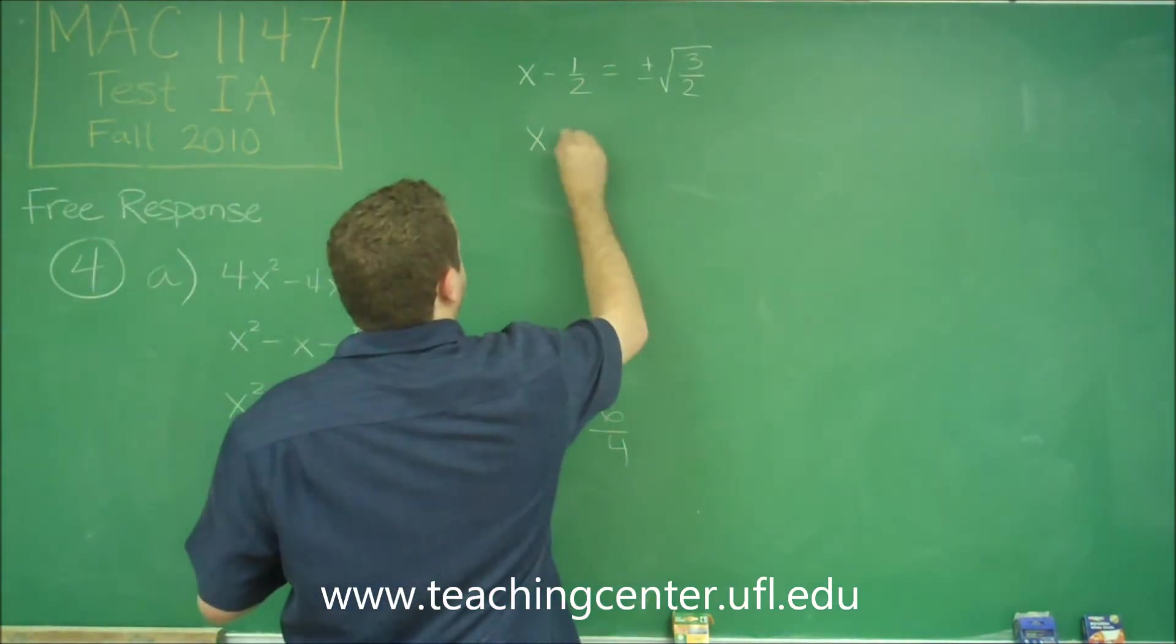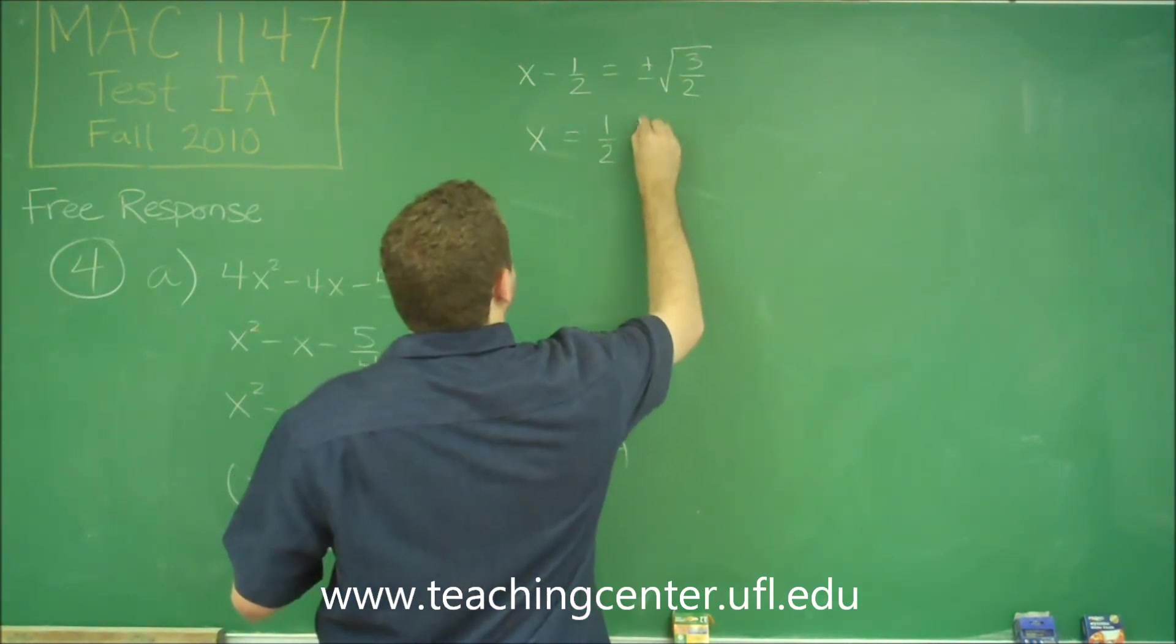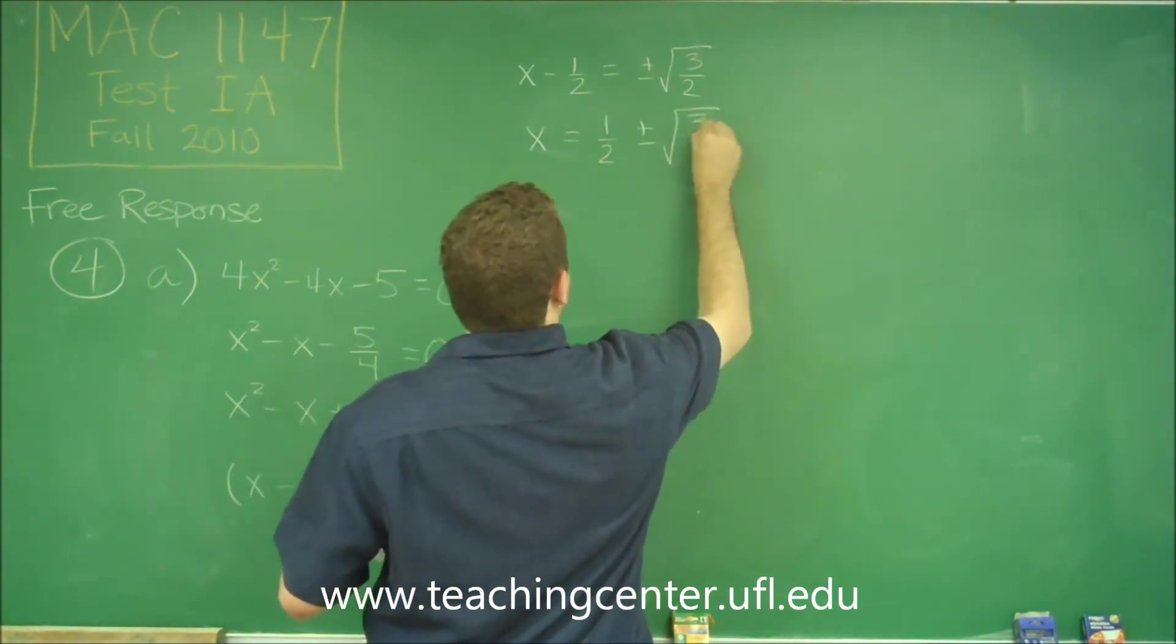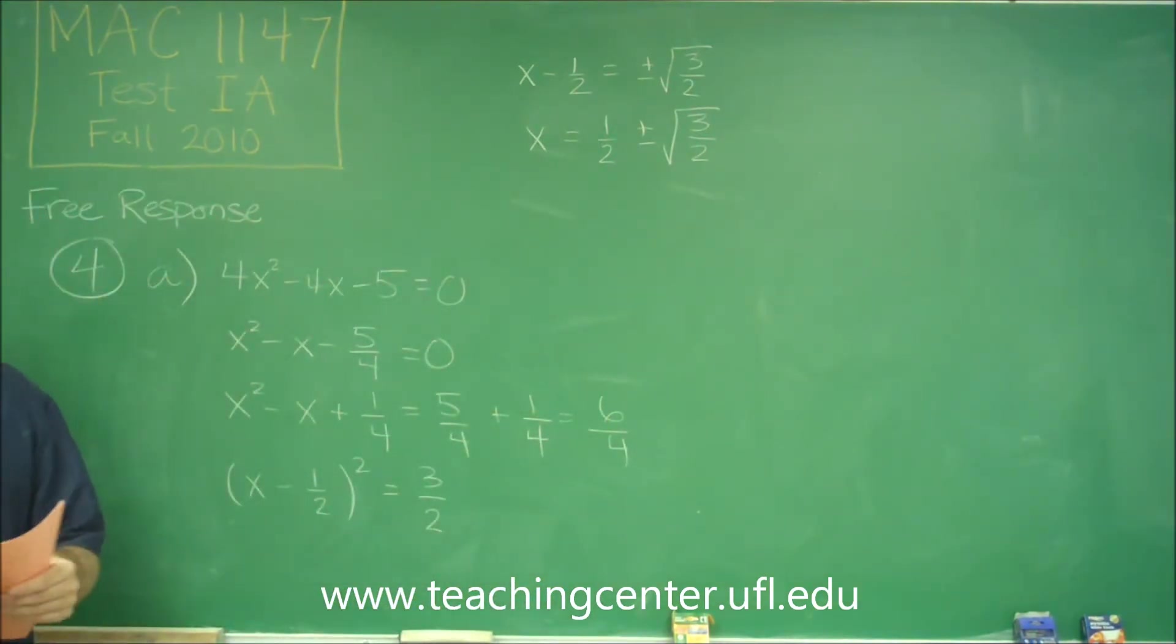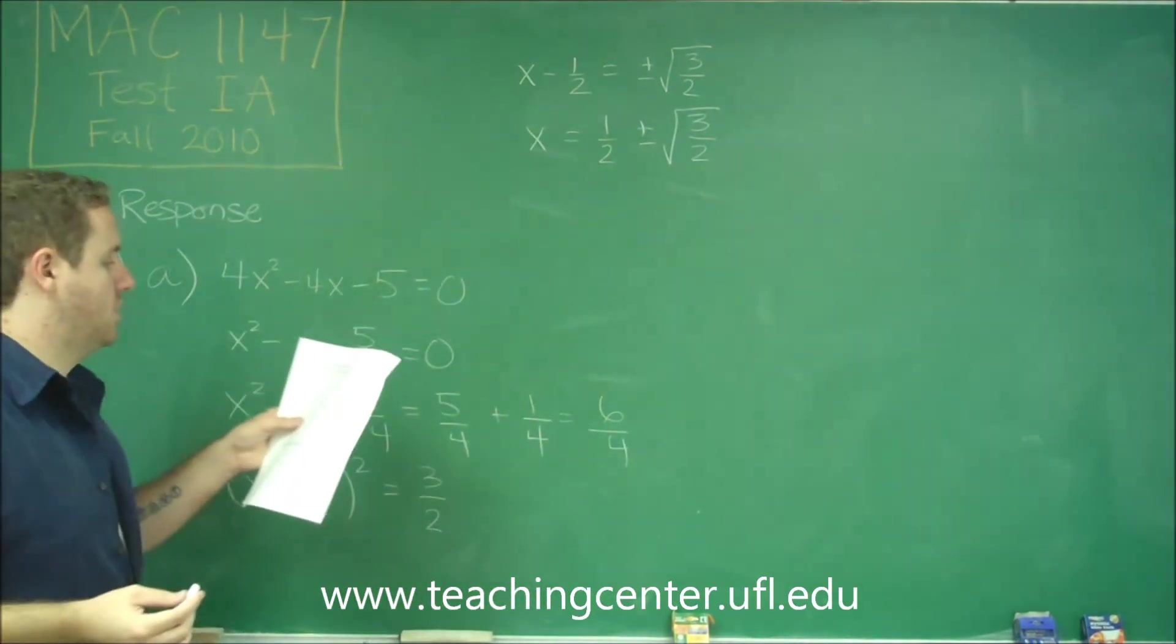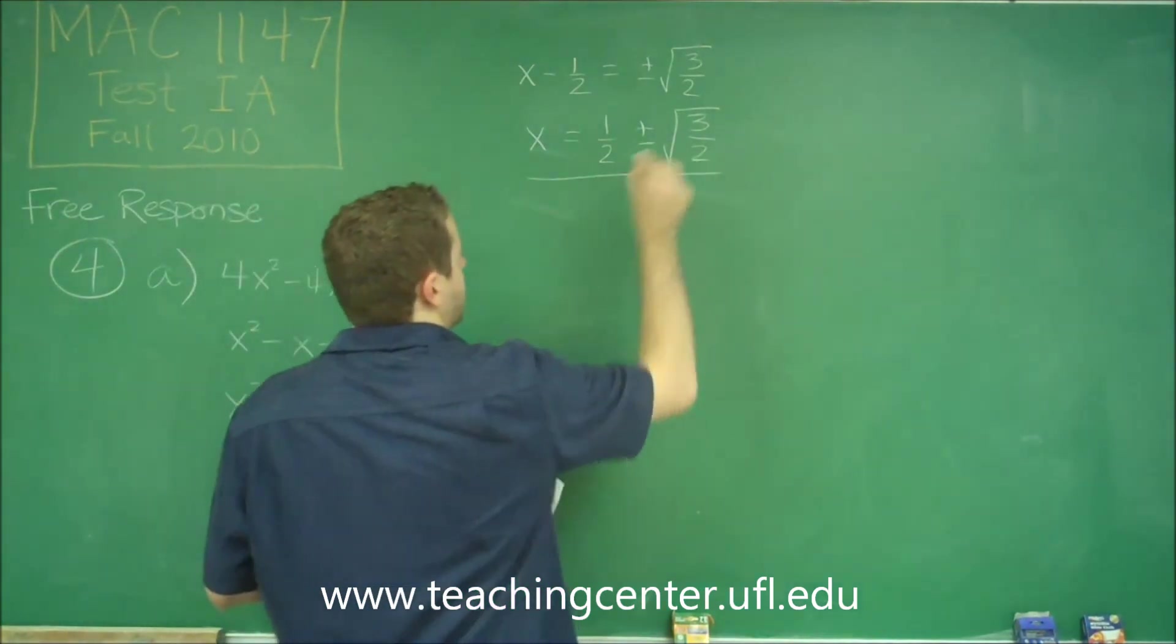And finally, we would add over the 1/2. So our solution is 1/2 ± √(3/2). So there's two solutions there, that makes sense because we had a quadratic. So that would be solving it by completing the square.